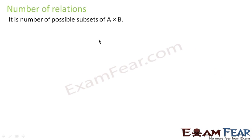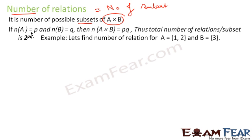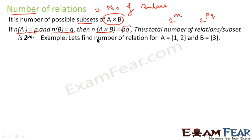The number of relations is the number of possible subsets of A cross B. Please note: number of relations is nothing but number of subsets. For example, if set A has p elements and set B has q elements, then set A cross B has pq elements. The number of subsets of a set which has pq elements is 2 to the power pq.